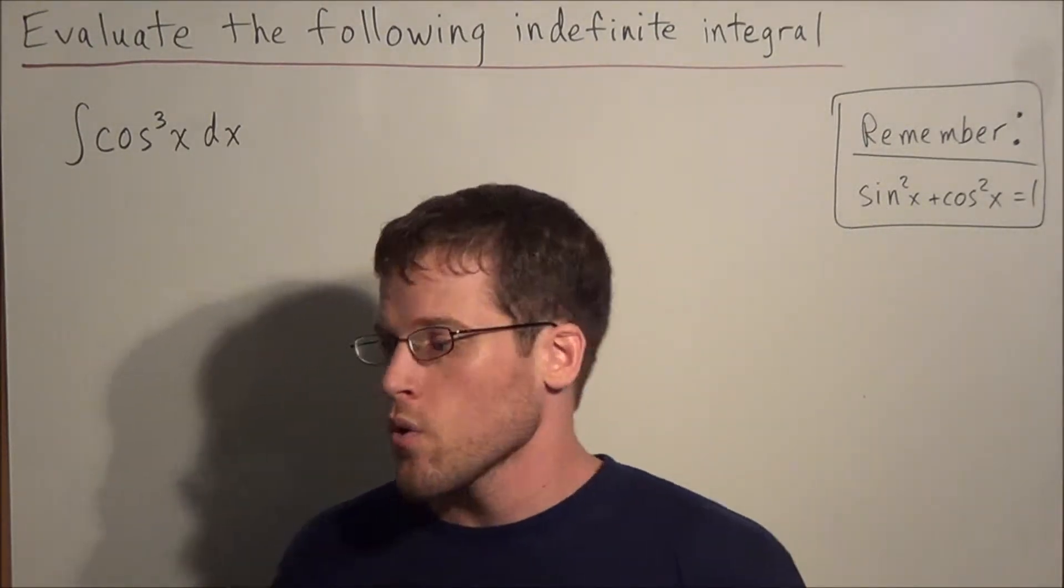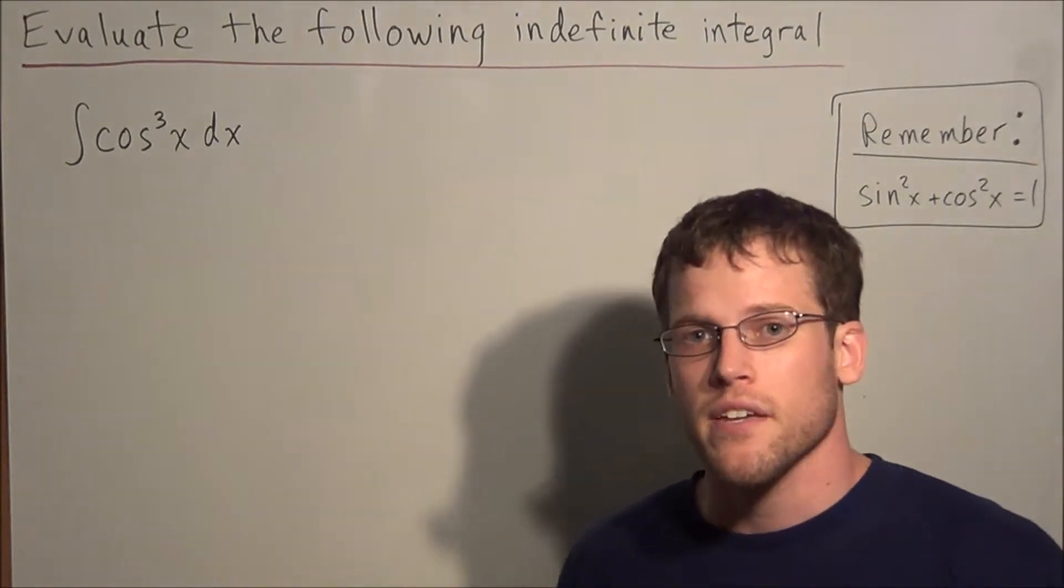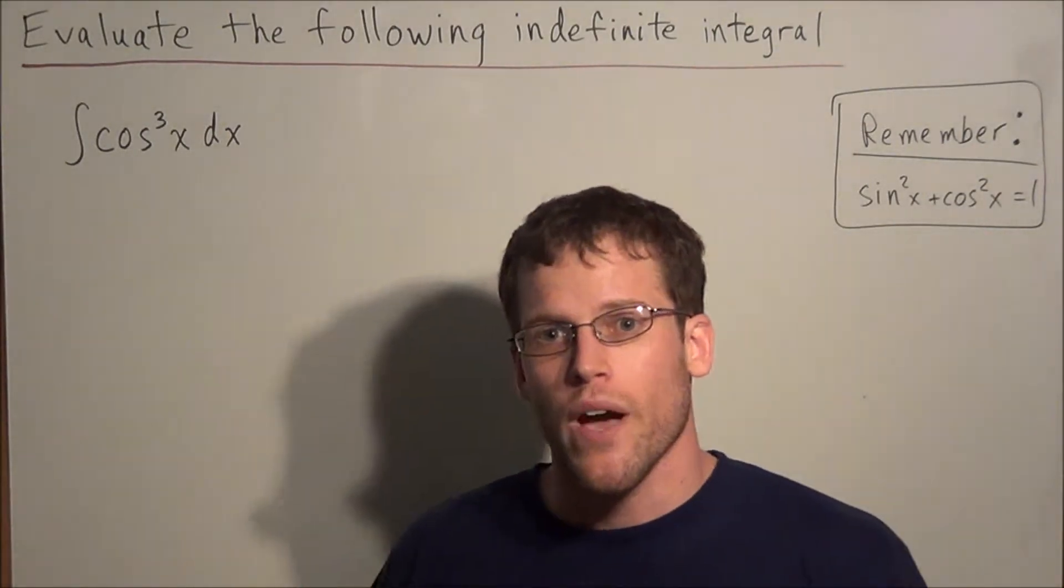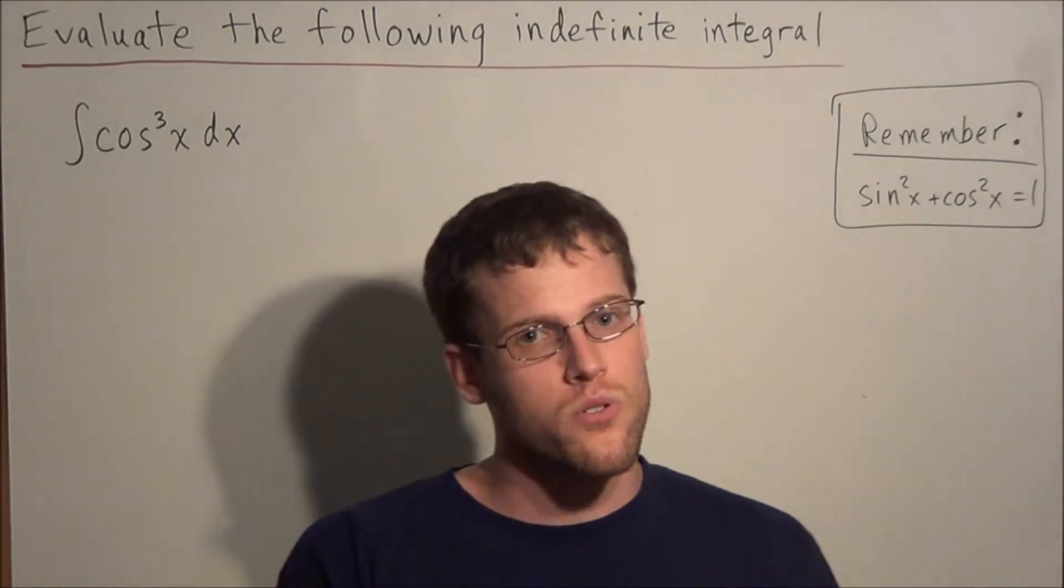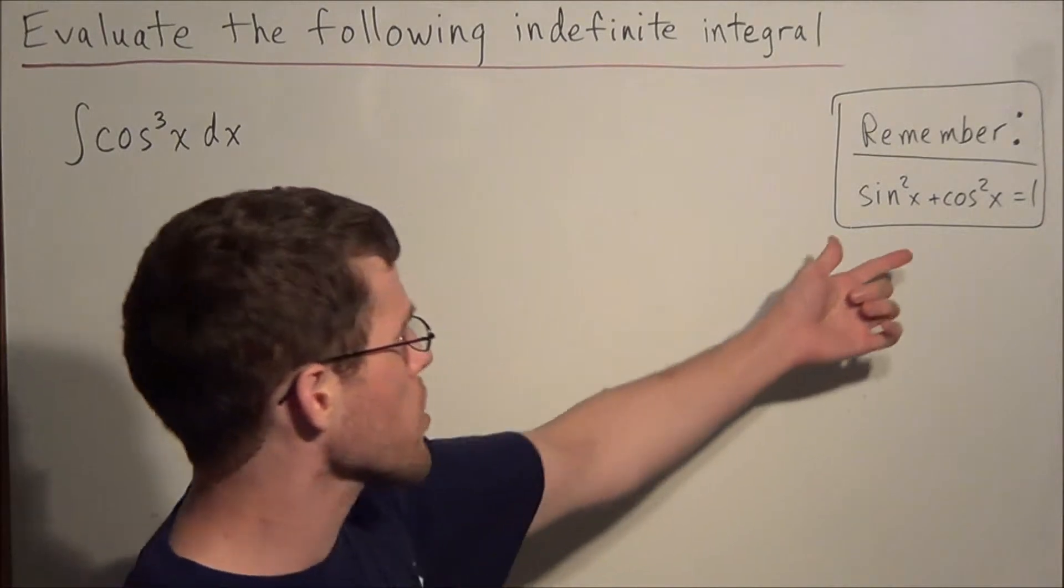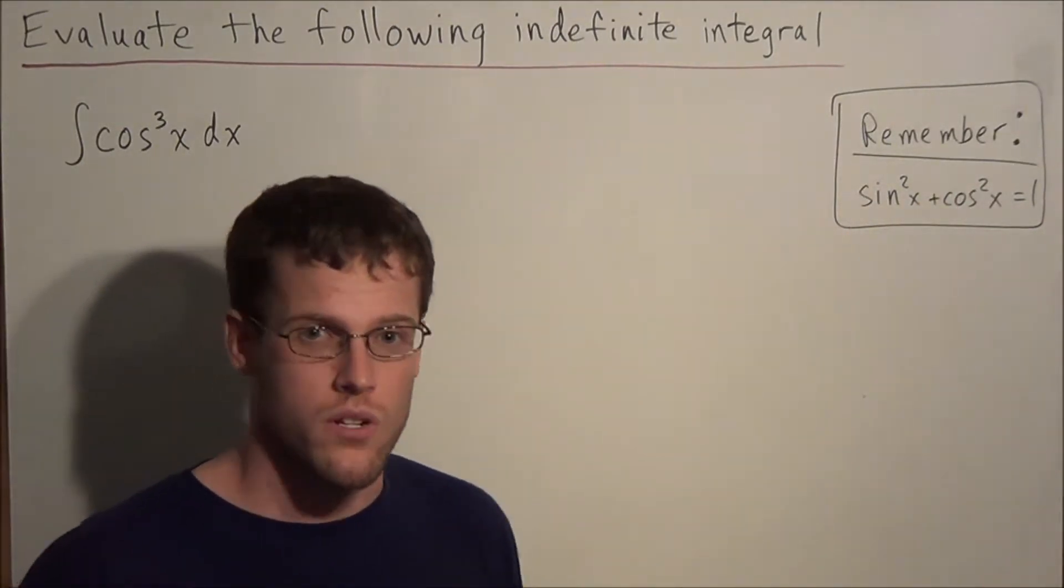So for problems of this type, whenever you're evaluating a trig integral, usually you want to make a substitution, but you want to do it in such a way that you have sine terms and cosine terms. And what I mean by this is, we're going to make use of the equation sine squared x plus cosine squared x equals 1.